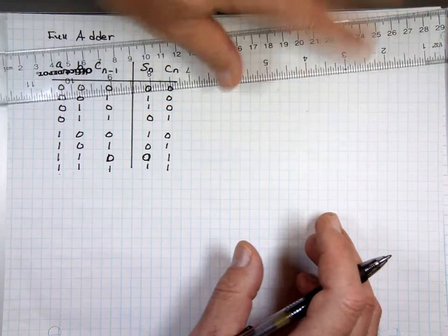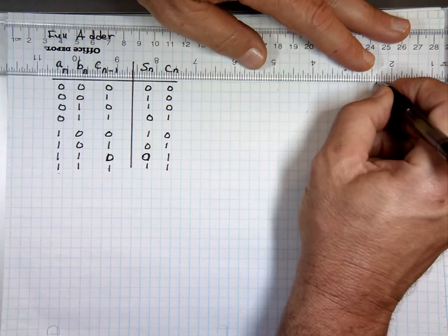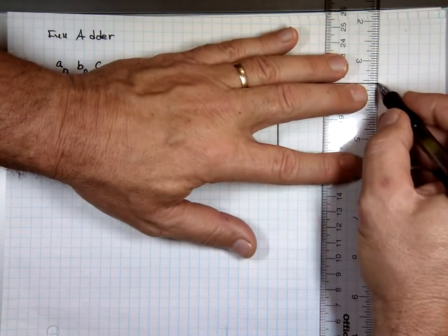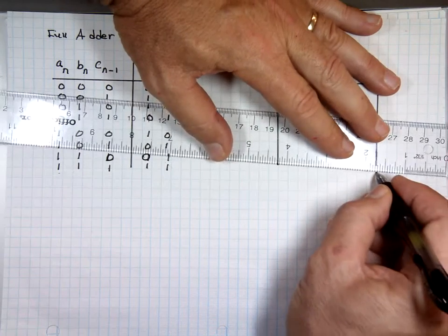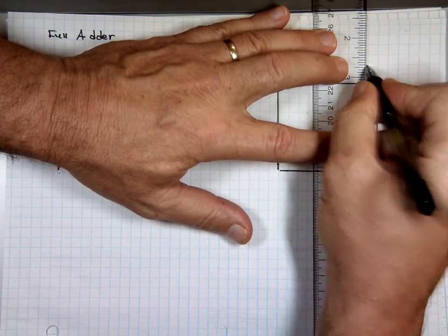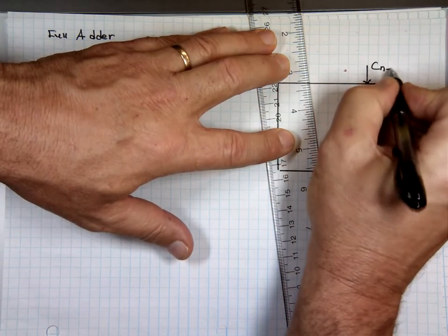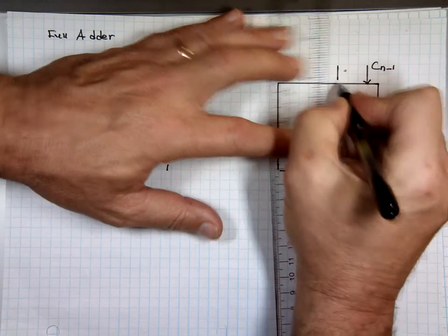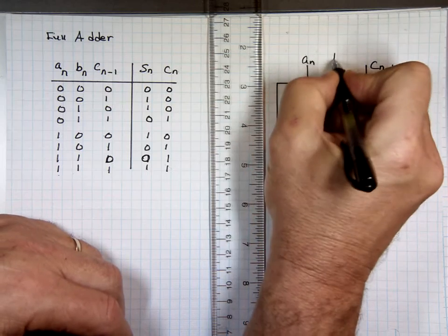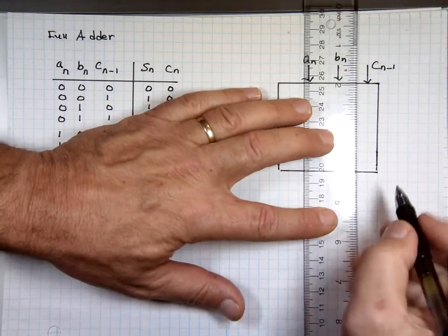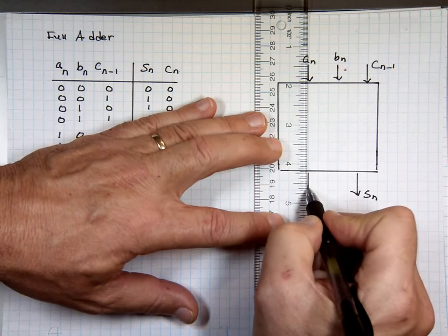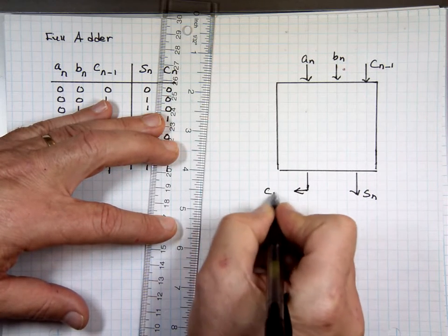When you look at it, it's a box, like when we draw it on a diagram here. It looks like this. It has a carry from the previous state, so we'll call that input here. C from the other state, from the previous state. And you have A and B.